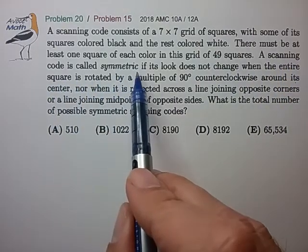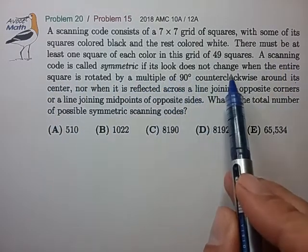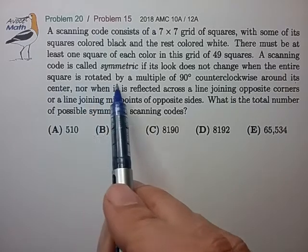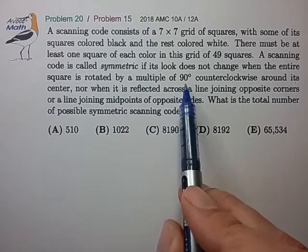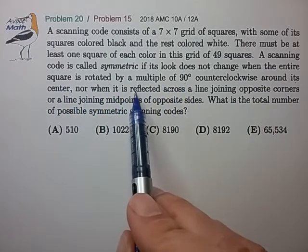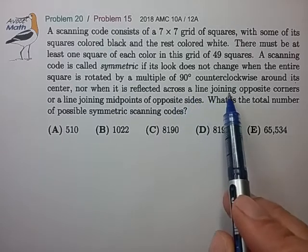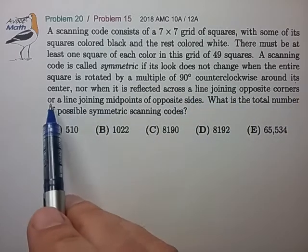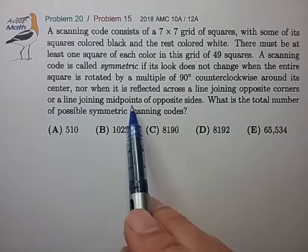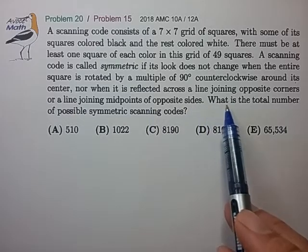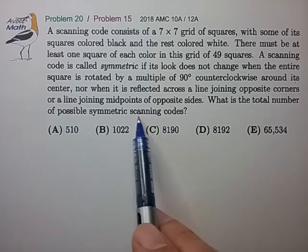A scanning code is called symmetric if it does not change when rotated by a multiple of 90 degrees, nor when reflected across a line joining opposite corners or midpoints of opposite sides. What is the total number of possible symmetric scanning codes?